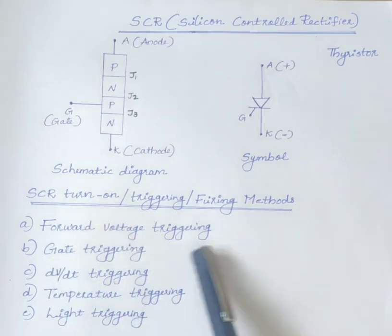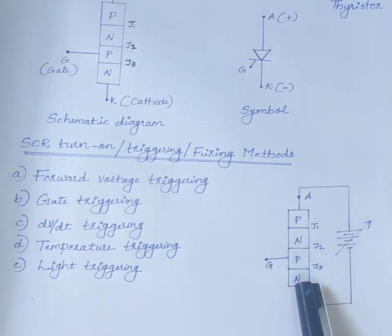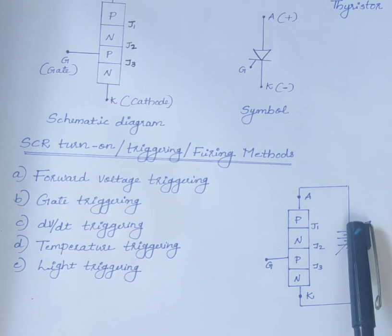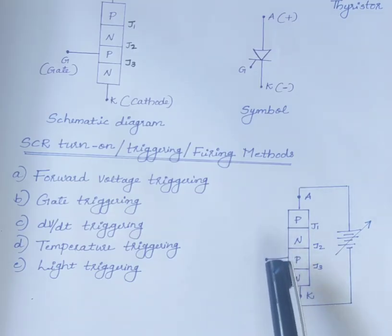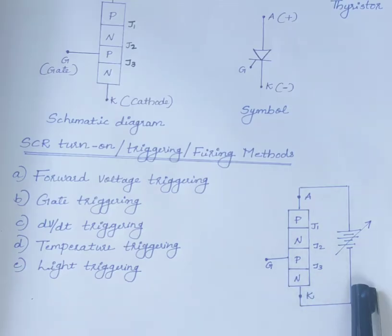First, we will discuss the forward voltage triggering. For this, SCR is forward biased means anode is connected to positive terminal of the battery and cathode is connected to negative terminal of the battery with the gate circuit open.